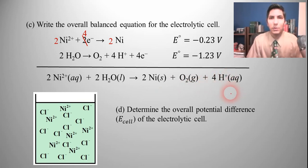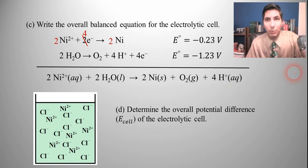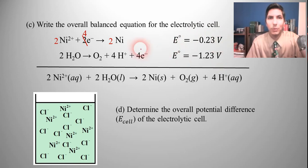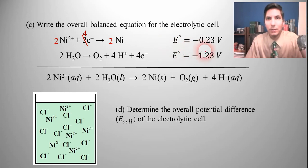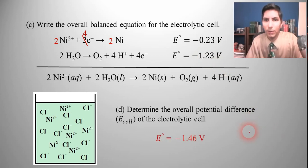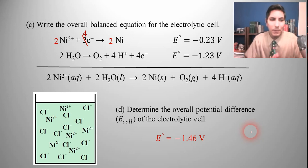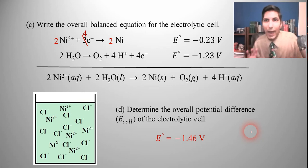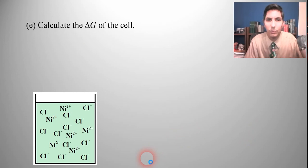Now let's determine the overall potential difference — the E cell for this electrolytic cell. We already have the two half-reactions, one written as an oxidation and one as a reduction, so we just add the two potentials together. Negative 0.23 plus negative 1.23 gives us negative 1.46 volts. That may seem strange since we're not used to negative voltages, but this is not a plain galvanic cell — we're actually adding electricity to make this work, which is why it's a negative potential difference.